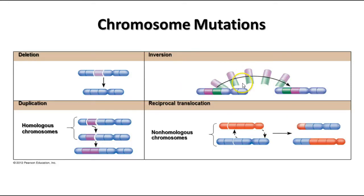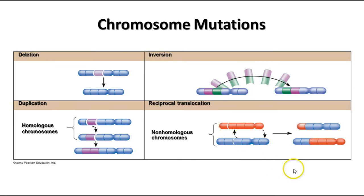Another thing that can happen is an inversion, where a section breaks off the chromosome and reinserts backwards. Since DNA has to be read in only one direction, reversing a section means it's not going to read or code properly for the proteins needed. In a duplication, when you have two homologous chromosomes, if part of one breaks off and inserts into the other, you end up with one chromosome that has two copies of those genes and one that is missing them. A reciprocal translocation occurs between two adjacent non-homologous chromosomes, where part of one breaks off and inserts on the other.